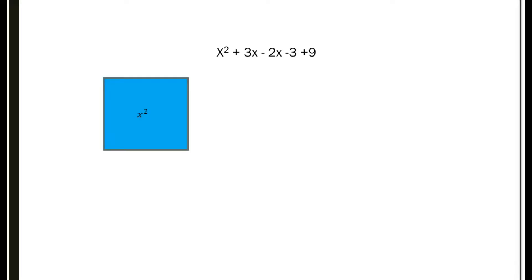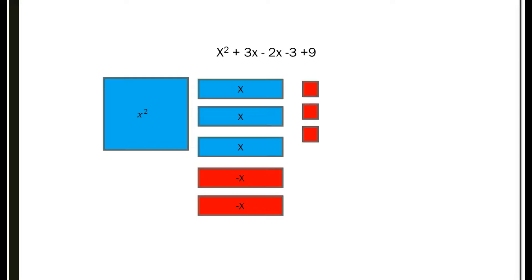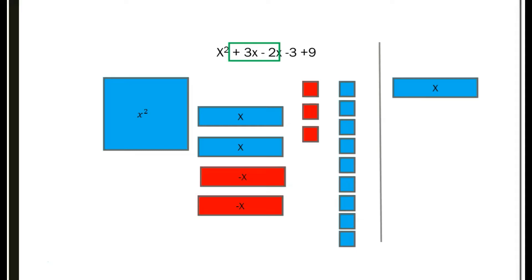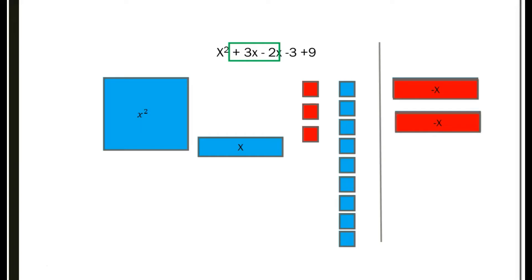Let's try another one. I have positive x squared plus 3x minus 2x minus 3 plus 9. Let me lay those out: 1 positive x squared, positive 3x, negative 2x, a minus 3, and a plus 9. Now let's use that line — anything that crosses over becomes zero. I'm going to pair up the 3x and minus 2x. We make two zero sets, and since there are no more reds, the blue x that's left over is your answer for that part.